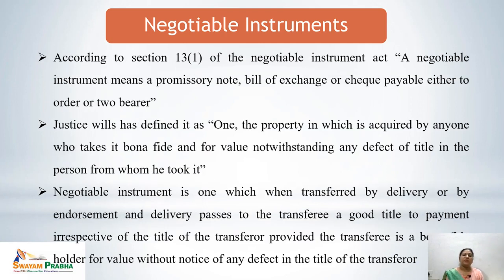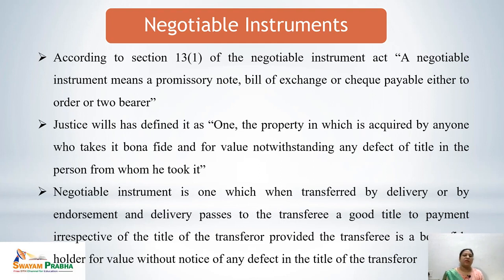Section 13(1) of the Negotiable Instruments Act 1881 defines a negotiable instrument as a promissory note, bill of exchange, or cheque payable either to order or to bearer. Justice Wills explained it as one whose property is acquired by anyone who takes it bona fide and for value, notwithstanding any defect of title in the person from whom he took it. In simple words, a negotiable instrument when transferred by delivery or by endorsement and delivery passes to the transferee a good title to payment.